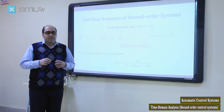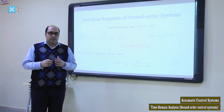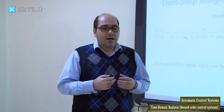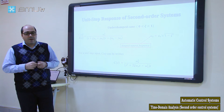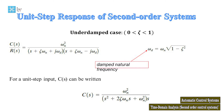Now let's investigate the unit step response of the second-order system. We investigated the location of poles for second-order systems and saw how the response changes according to pole placement. I'll now discuss the unit step response. The transfer function of the second-order system is as defined. First, I'd like to talk about the underdamped case, where zeta is between 0 and 1.